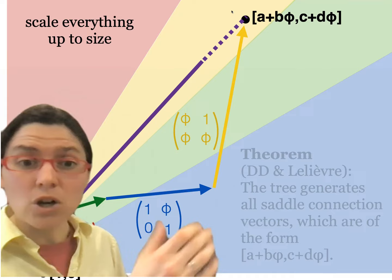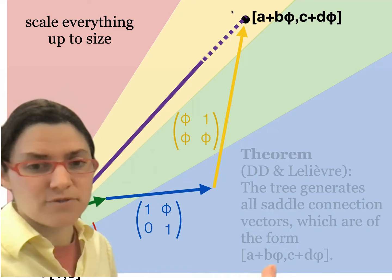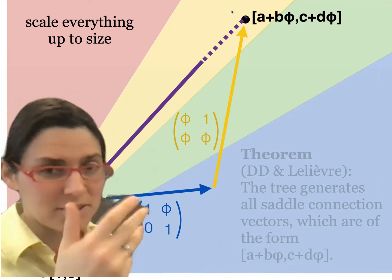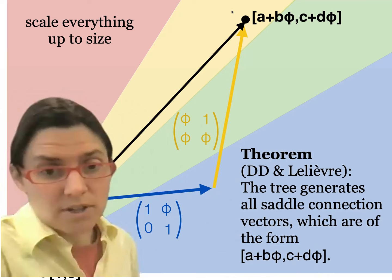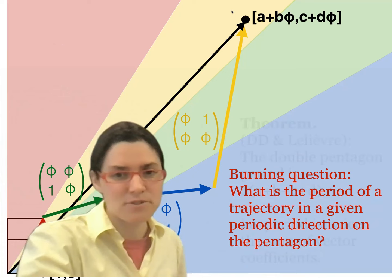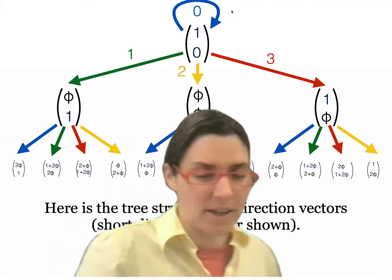We can make a tree of all possible periodic directions, all of the form (A + Bφ, C + Dφ). We don't get everything of this form, but everything we get is of this form. This still doesn't answer our burning question: what is the period in a given periodic direction on the pentagon?